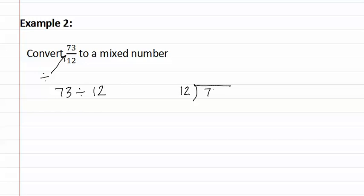Let's write this as a long division problem. Twelve goes into seventy-three six times, six times two is twelve, six times six is one plus one is seventy-two. And we have a remainder of one.